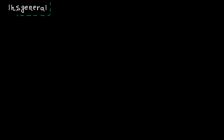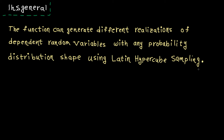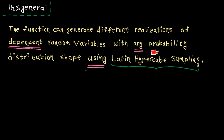First, let me explain what this function does and why it's useful. The function can generate different realizations of dependent random variables with any probability distribution shape using Latin hypercube sampling. If you don't know what Latin hypercube sampling is, please watch my tutorials on random sampling before continuing. I have five short tutorials and you can master the topic in less than half an hour. The main objective is to generate different realizations of dependent random variables with any probability distribution function using Latin hypercube sampling.